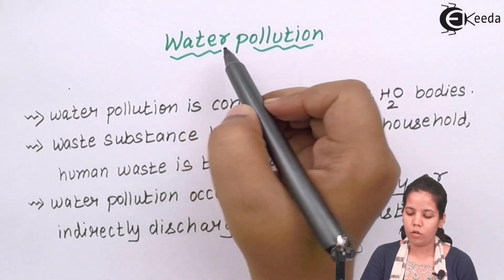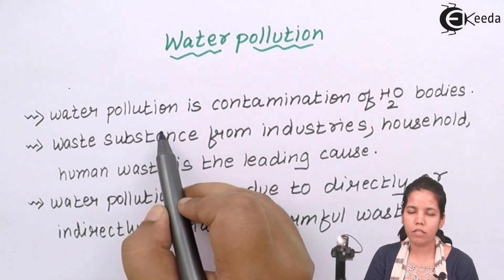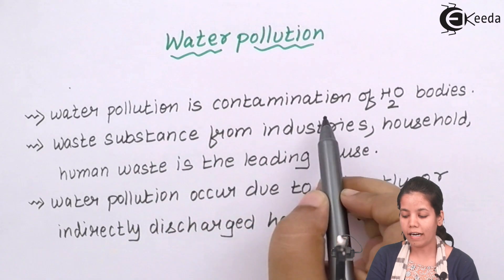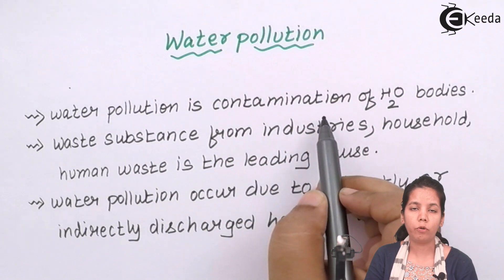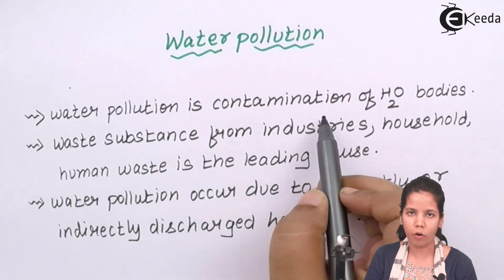Water pollution — the simple definition goes as: contamination of water bodies. The water body could be a lake, river, ocean, or even a simple pond.